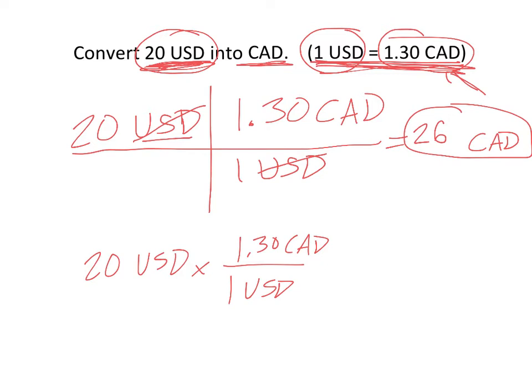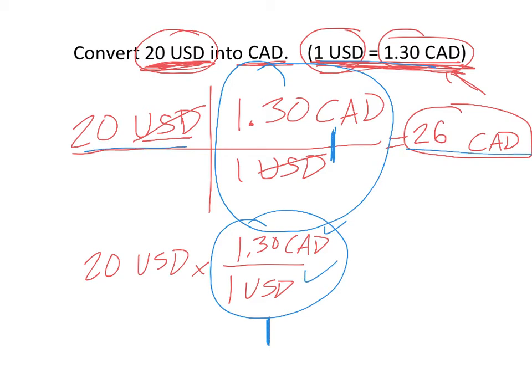And so whenever we do a fence post, whatever is in this upper and below thing, these have to be equivalent. They have to be equal to each other from the exchange rate. Because basically what we're doing when we do a fence post is you're multiplying by 1. If the numerator and the denominator are equal, then this fraction is 1, which means that this has not changed value. These are equivalent. 20 U.S. dollars is equal to 26 Canadian dollars.